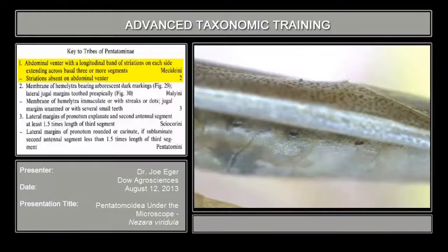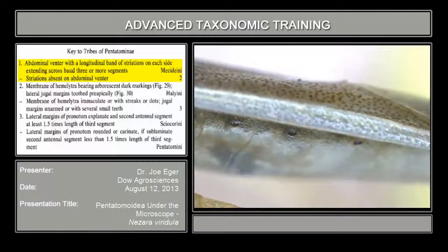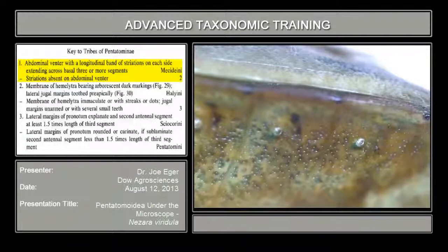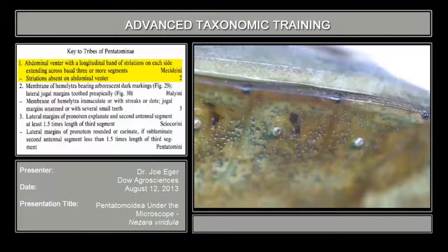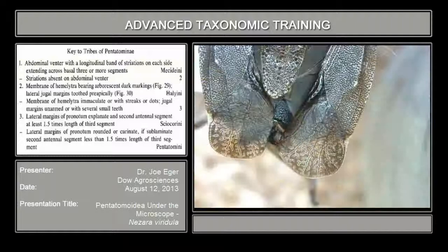The first character: abdominal venter with a longitudinal band of striations on each side, extending across the basal three or more segments. You can probably see these striations here — this is typical of the tribe Mecideinae. If you look at the first three abdominal segments on our bug, you'll see there are no striations; it's just normal cuticle.